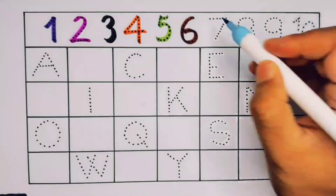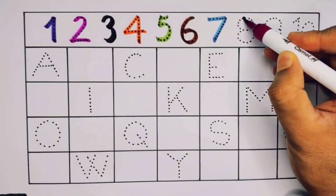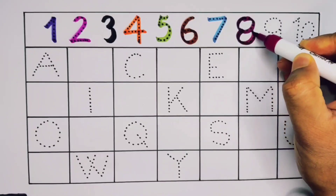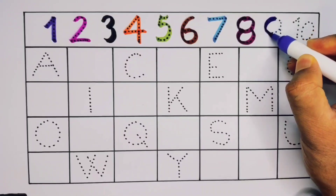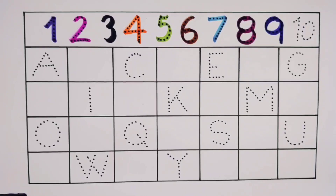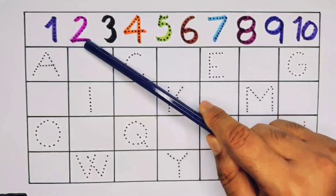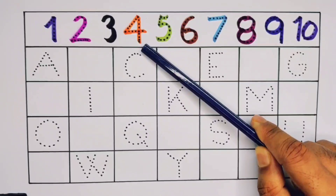What comes next, kids? It's six, number six. Next it's seven, number seven. It's eight, number eight. Next it's number nine. What comes next? It's ten, number ten. We learned one, two, three, four, five, six, seven, eight, nine, ten.